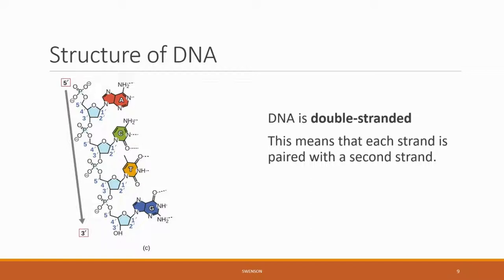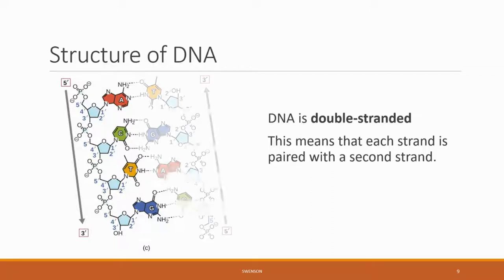Look more carefully at the deoxyribose sugar. Each point in the ribose is a location of a carbon, and each carbon is numbered, starting with the one bound to the nitrogenous base, moving clockwise, to the last one that is bound to a phosphate.